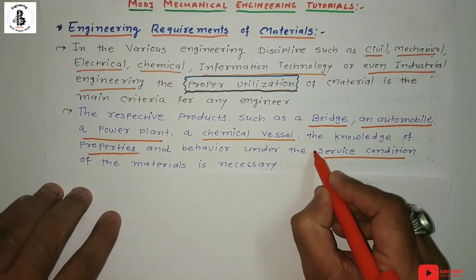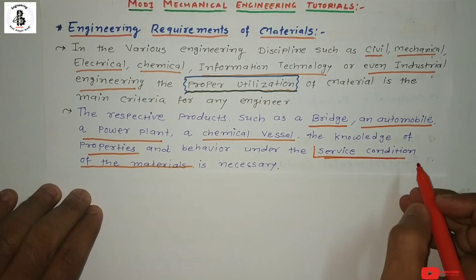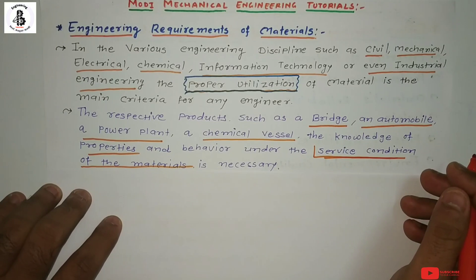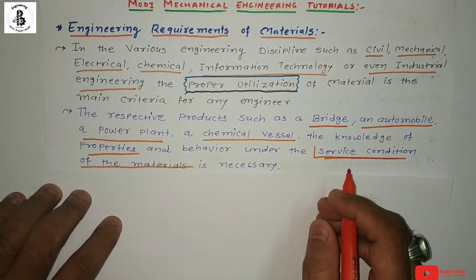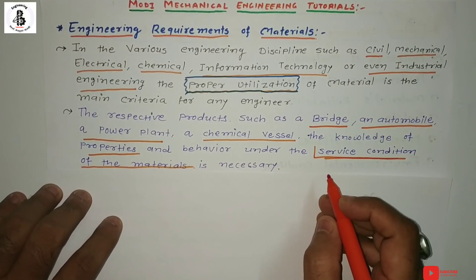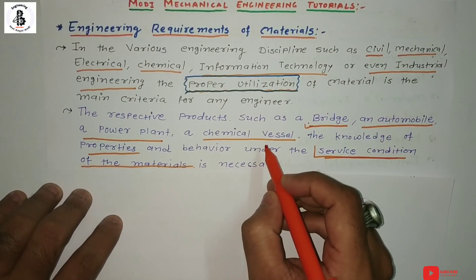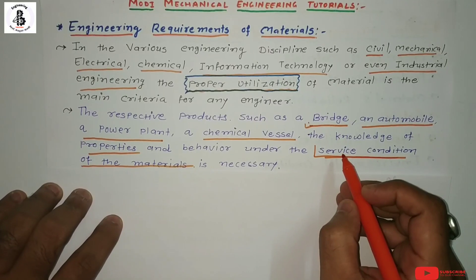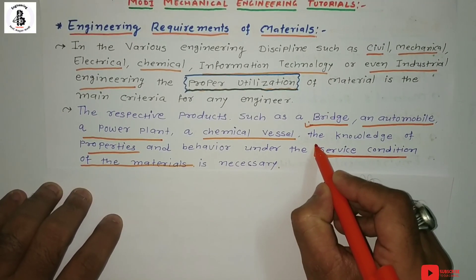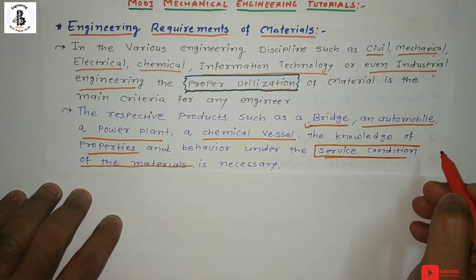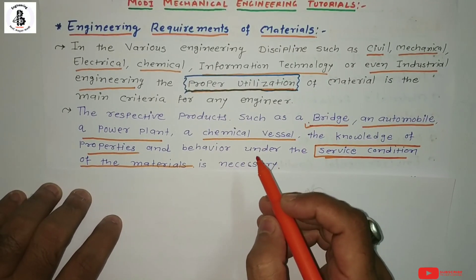Basic knowledge of the properties and behavior of materials under service conditions is necessary. The service condition includes loading conditions, and different applications have different conditions. For a Boiler, it is high pressure and high temperature, so the selected material must withstand higher temperature and higher pressure. Bridge materials, Automobiles, and Chemical Vessels each have their own different conditions. Proper utilization of selected materials depends on understanding these service and loading conditions.